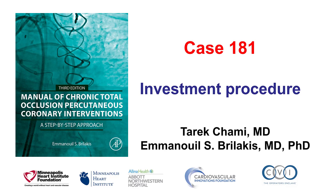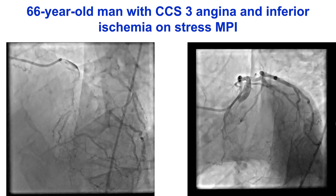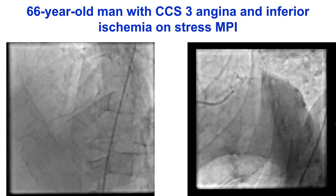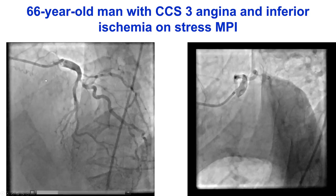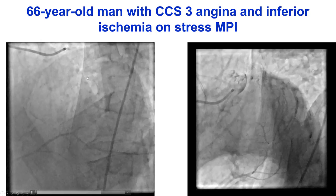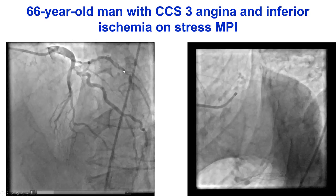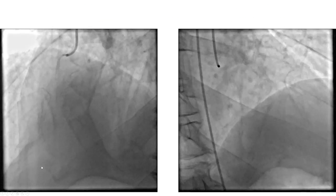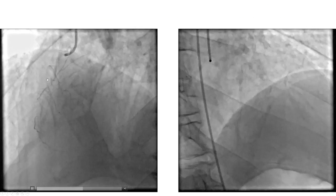This is a case of an investment procedure. The patient was a middle-aged gentleman who presented with significant angina and was found to have inferior ischemia on stress testing. Coronary angiography demonstrated mild to moderate disease in the LAD, some disease in the proximal circumflex, and there was collateral filling all the way to the PDA and the PLV. The right coronary artery had a CTO in the mid-segment.